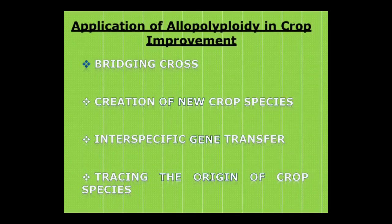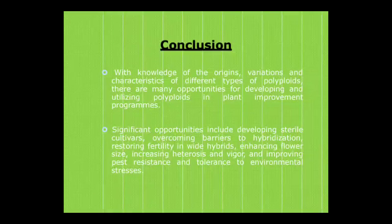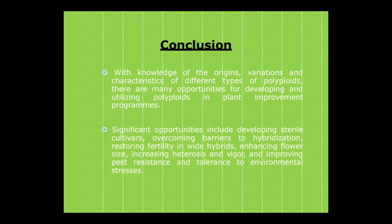The detailed applications of polyploidy in crop improvement include bridging cross, creation of new crop species, interspecific gene transfer, and tracing the origin of crop species. With knowledge of origins, variations, and characteristics of different types of polyploids, there are many opportunities for developing and utilizing polyploids in plant improvement programs. Hybridization can give rise to new varieties and species with better yield, better properties, and hybrid characteristics.